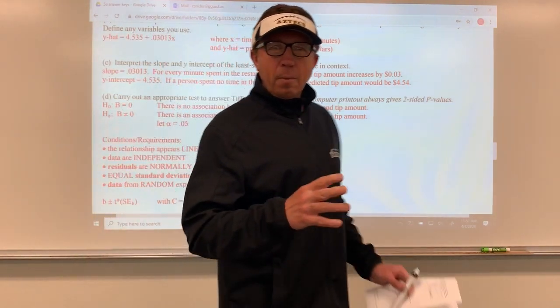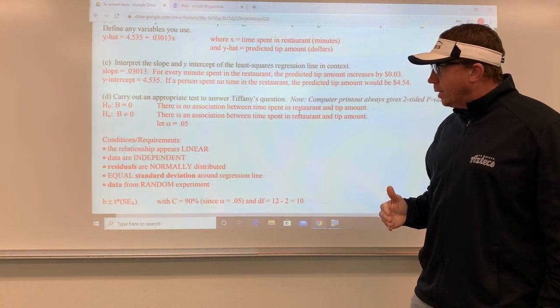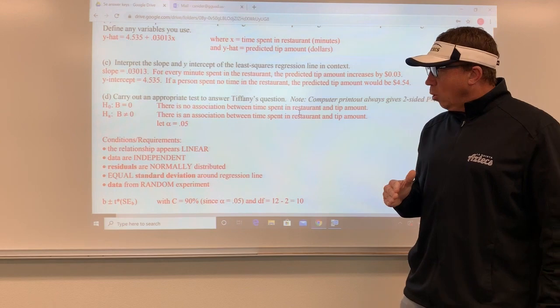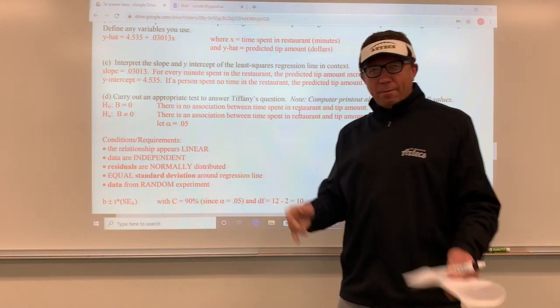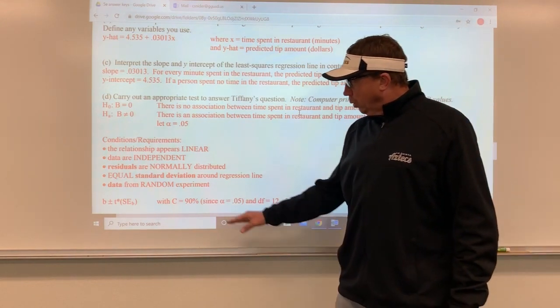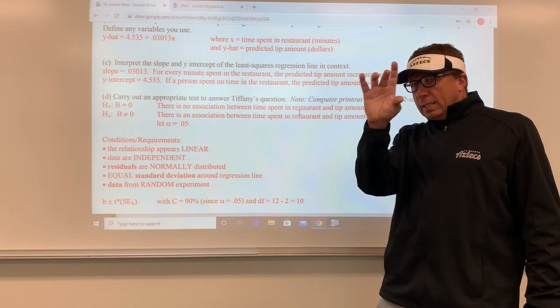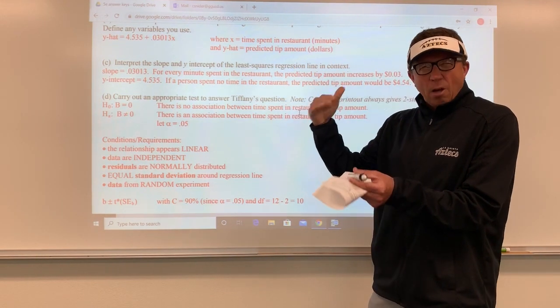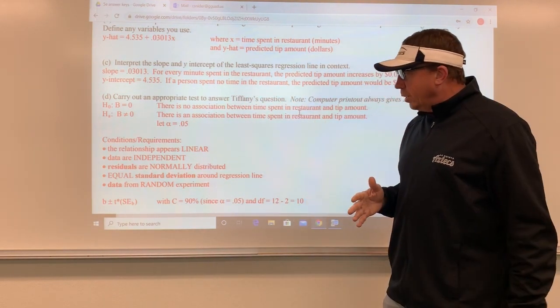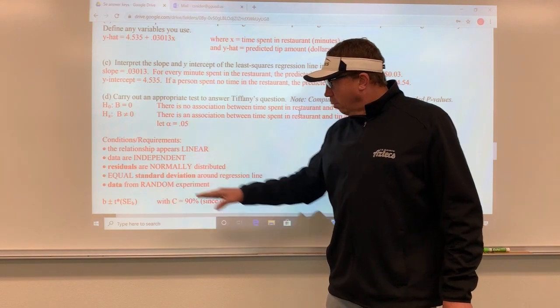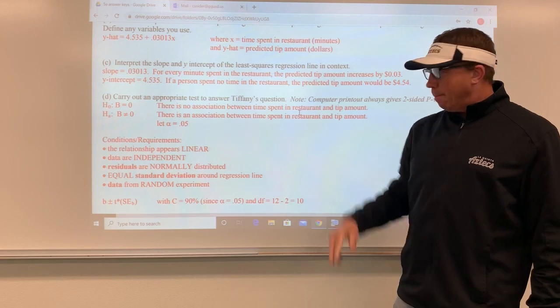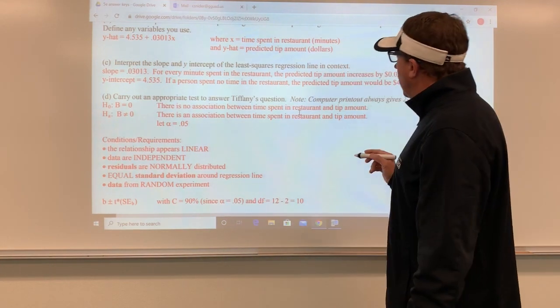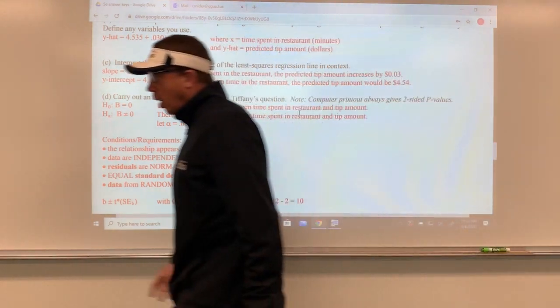Now my conditions. The acronym for this that I've chosen for my classes is the word LINEAR. L stands for does the relationship look linear? And we said earlier, yeah it does. I stands for independent. We're assuming all the data points are independent, all those tips are independent from the different groups that Tiffany collected. The N: are the residuals normally distributed? I showed you that earlier where about 68% of the residuals were within one standard deviation of the line, and then 95%, in this case all 12, were within two standard deviations. So the residuals are roughly normal. And then I showed you on the other chart that there was an equal standard deviation around that line, balanced top and bottom. And then I'm assuming the data was from a random experiment. All you really have to do on this is just read the chart.